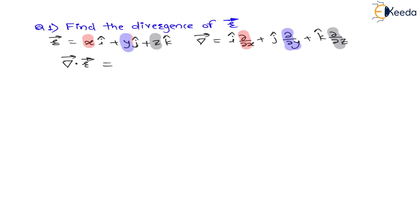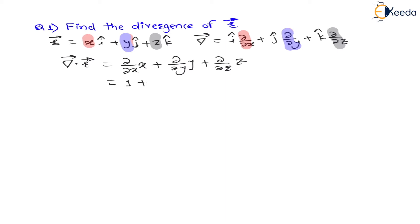So we write ∂/∂x of x plus ∂/∂y of y plus ∂/∂z of z. Differentiating x with respect to x gives 1. Similarly differentiating y with respect to y gives 1, and z with respect to z gives 1. Therefore del·r, which is the divergence of vector r, is equal to 3. This is the answer for the first question.